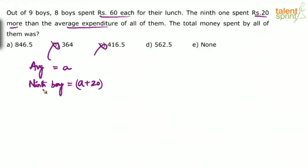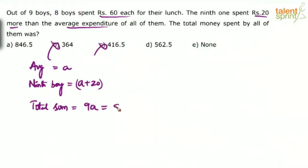Try to balance the total sum. Average is A, and there are nine boys, so total expenditure will be nine A. This should equal the breakup: eight boys spent 60 each, so eight into 60, plus the ninth boy spent A plus 20.